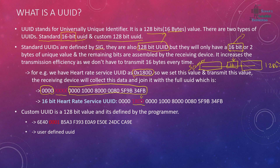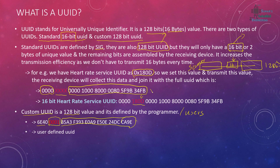We also have a custom UUID type, which is also 128-bit and is defined by the programmer or user. In a custom UUID, you define the unique portion, but make sure the base address is not the same as the standard base address, otherwise it won't work. Using a custom UUID, users can send their own vendor-specific identifiers.